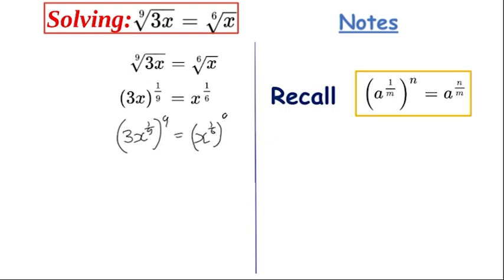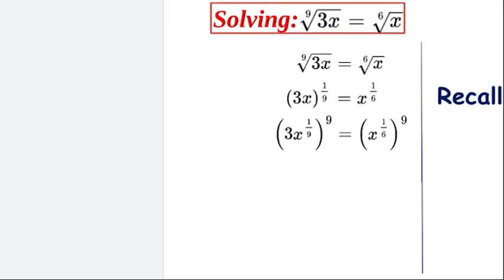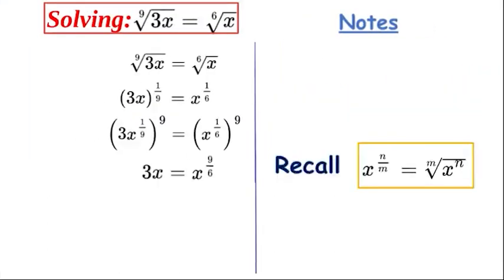Now let's recall this formula where we have a fractional root n over m, and we can rewrite it as x to the power of n - that's the number we have - and that's the root number. So we can go 3x is equal to, so we're going to have the six root back again, and x to the nine inside.